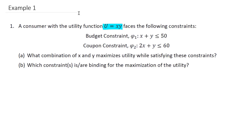We have a consumer with a utility function x, y. We have a budget constraint: x plus y is less than or equal to 50. And we have a coupon constraint: 2x plus y is less than or equal to 60.